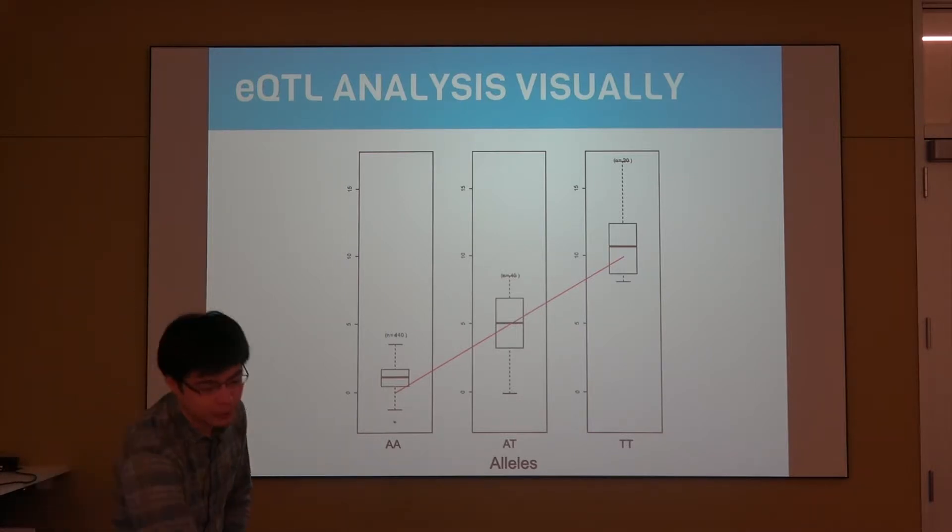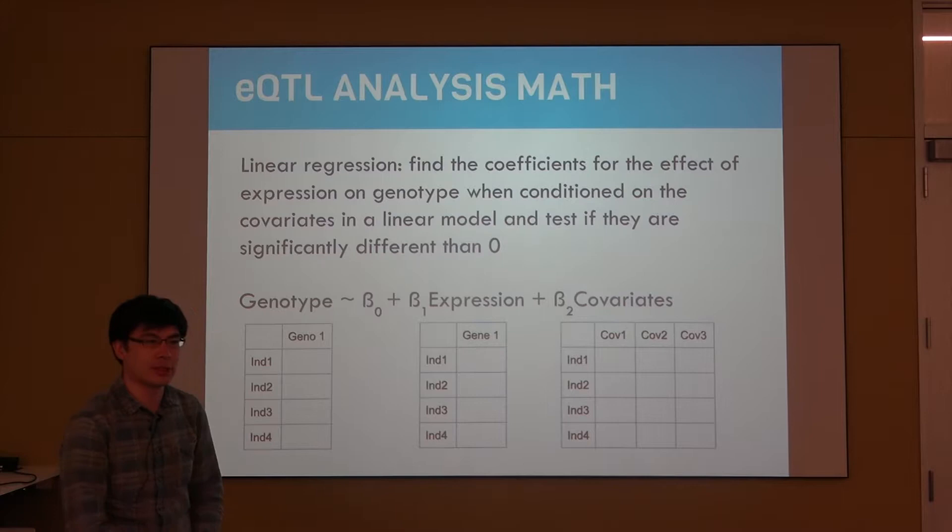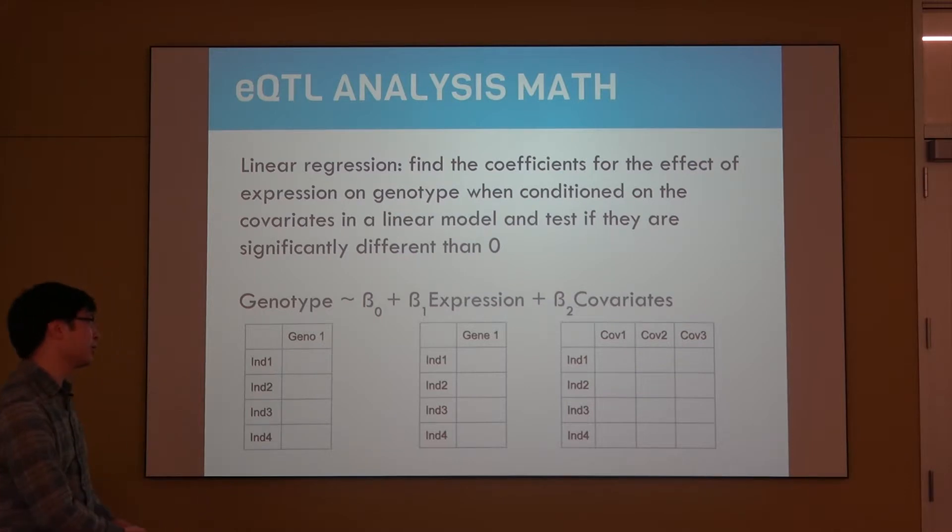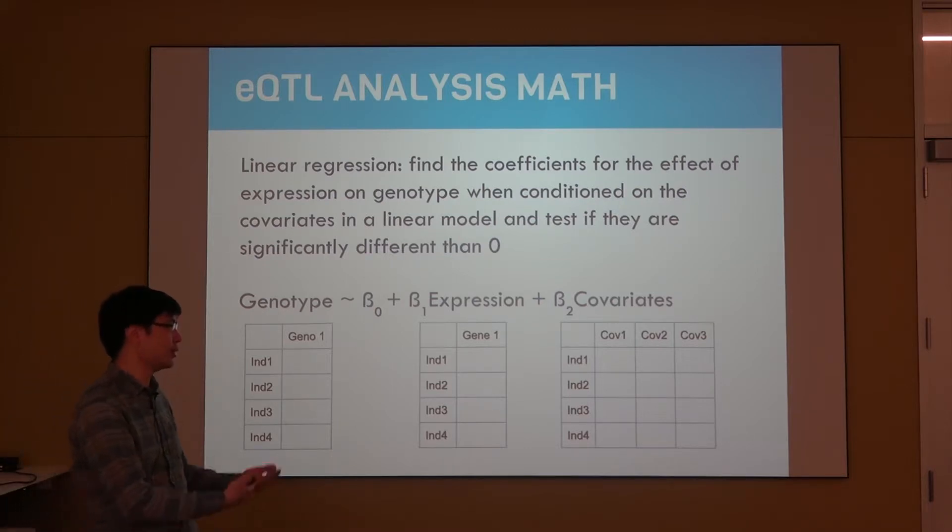Not to get bogged down by the math, but linear regression for this type of thing uses this equation down here where the genotype is based on the gene expression plus some covariates. This is tested for a genotype across all individuals versus a single gene across all individuals and then the covariates across all individuals, and this is done in a one-to-one relationship.